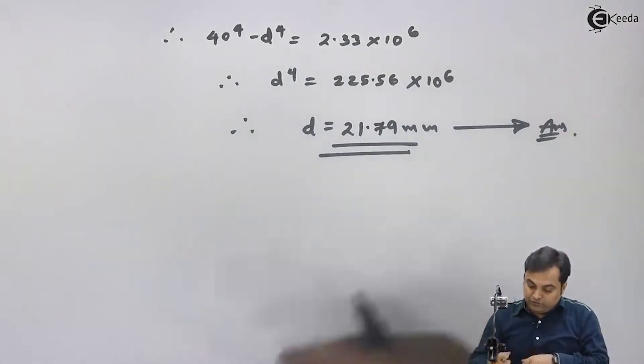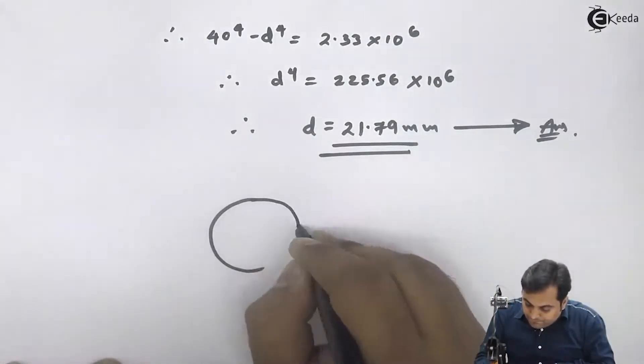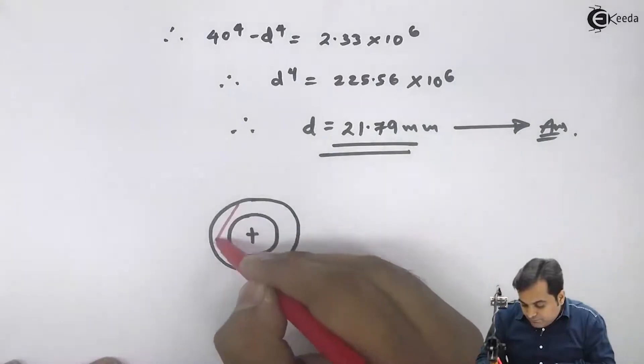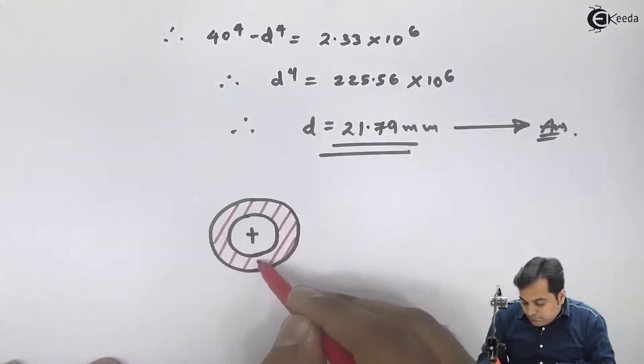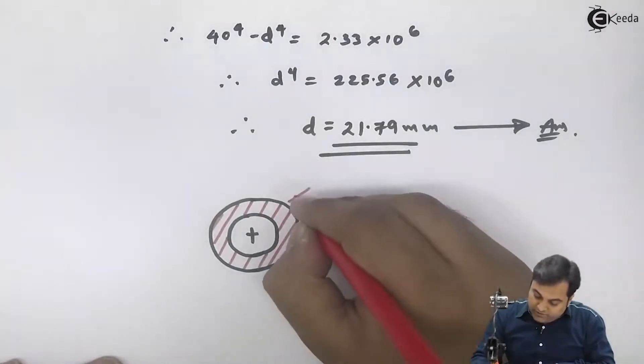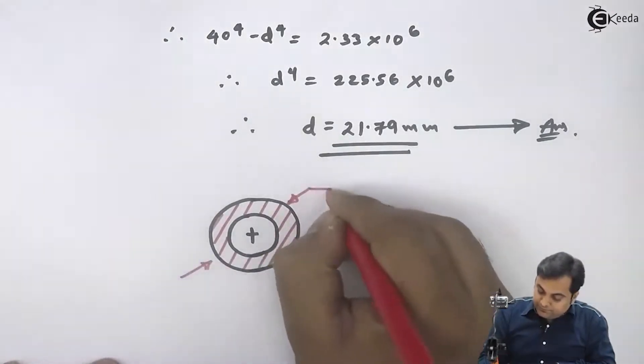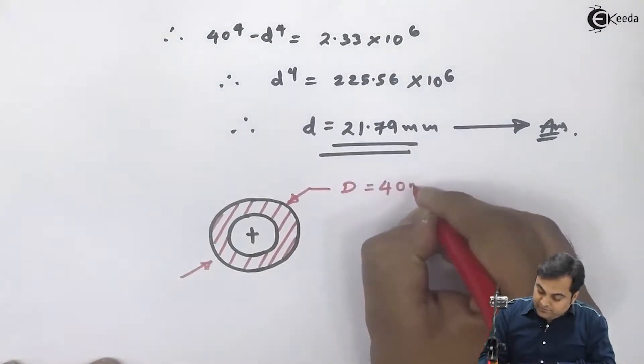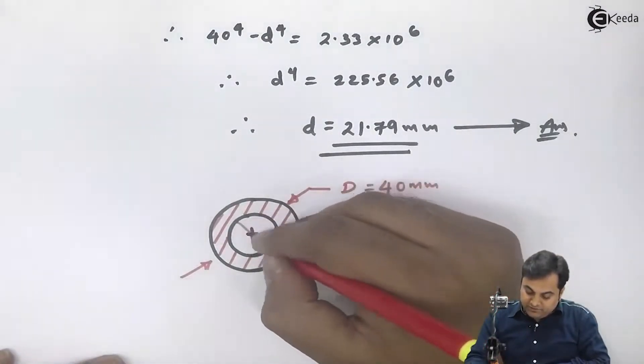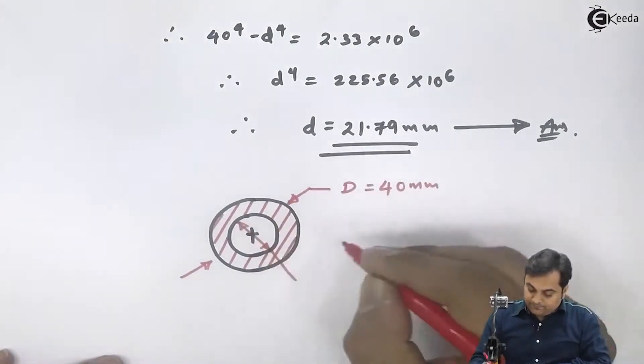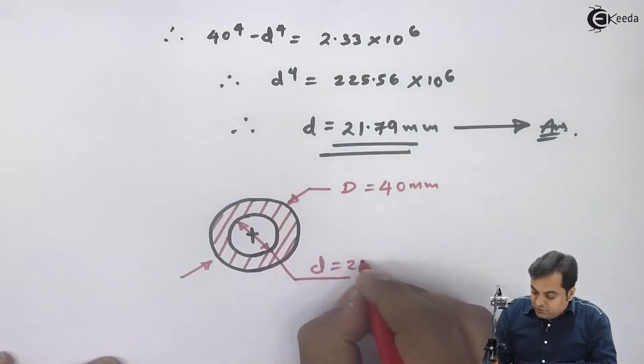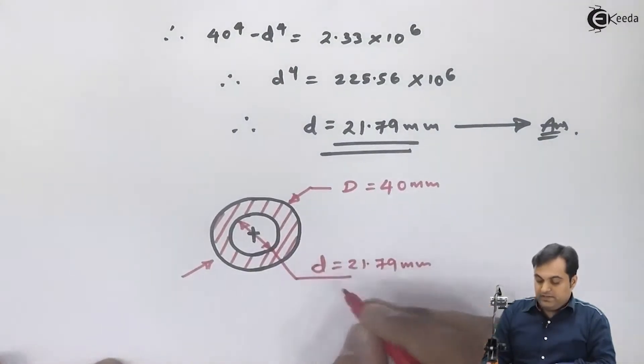Now if I want to show this hollow shaft, here we have a hollow shaft whose external diameter was given in the problem as 40 mm and internal diameter we have calculated, this is 21.79 mm. And with this we complete the question.